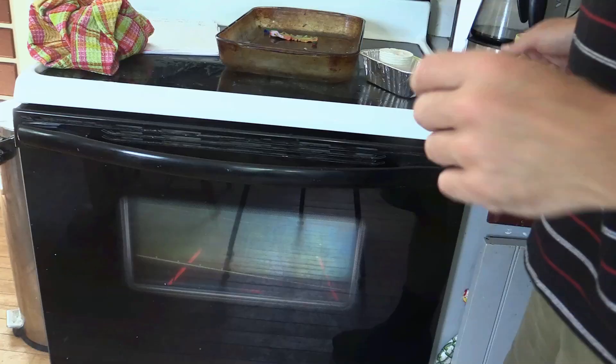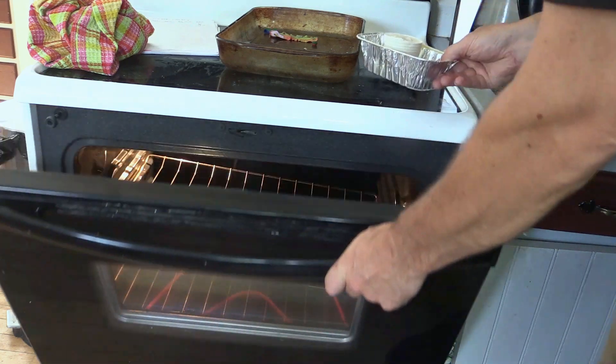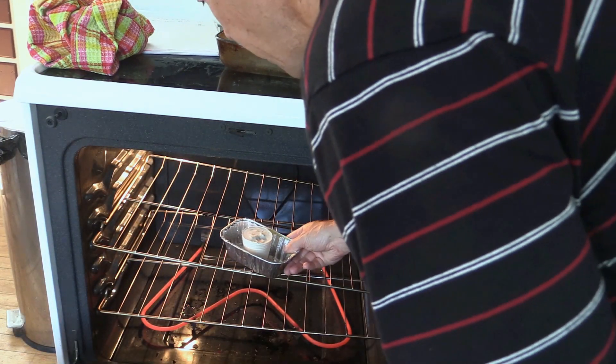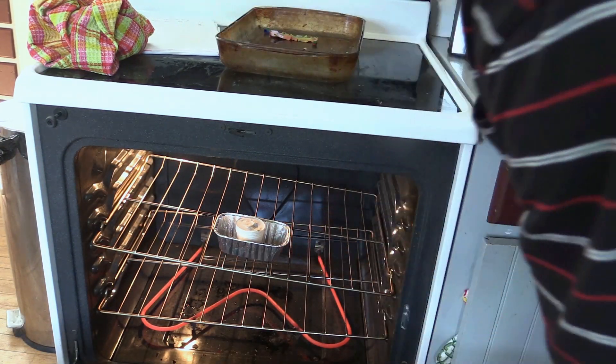I melted out the wax at 350 degrees Fahrenheit in an oven for about 20 minutes. Don't let this wax overheat because it can catch fire.